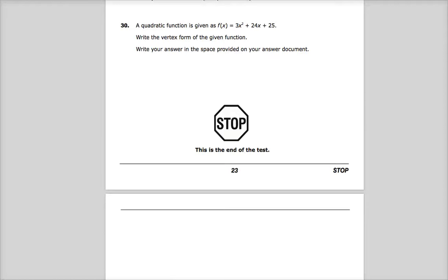Question number 30, the final question on the Integrated Math 2 practice test for TN Ready TCAP. We're in subpart 3, so calculator's allowed here. A quadratic function is given as 3x squared plus 24x plus 25. Write the vertex form of the equivalent function. Write your answer in the space provided on the answer document.